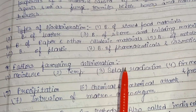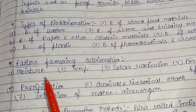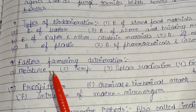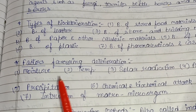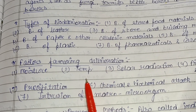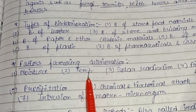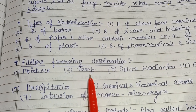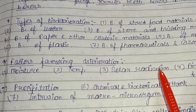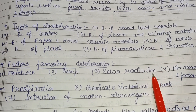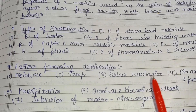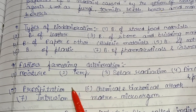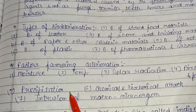There are some factors that favor bio deterioration. First is moisture — it helps in the growth of agents that cause bio deterioration. Then temperature: warm temperature favors the growth of bio deterioration. Solar radiation also provides a stimulus for their growth, and air movement, pressure, and precipitation (rainfall) are prime factors providing favorable conditions.